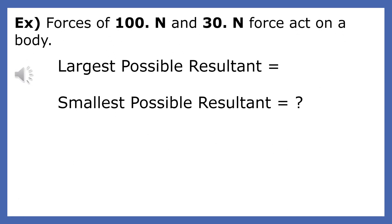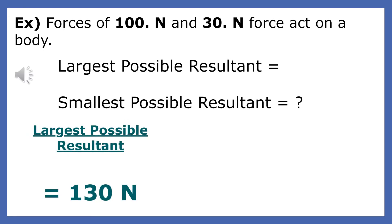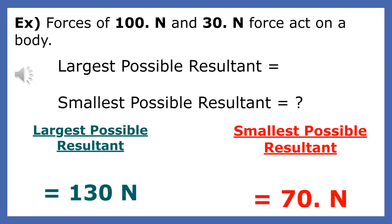We can find the maximum and minimum resultant by adding and subtracting the forces given. When we add the two forces, we find the maximum resultant is 130 newtons. When we subtract the two forces, we find the minimum resultant is 70 newtons. Since these values are the maximum and minimum resultants, we also know that every force in between these two values is possible.